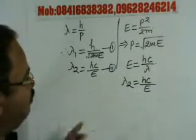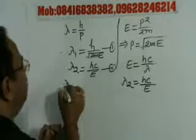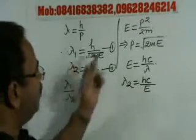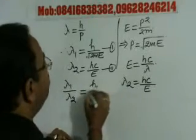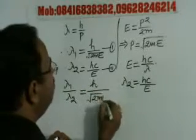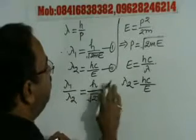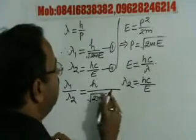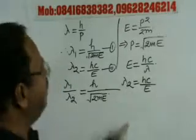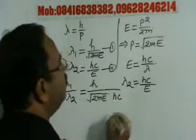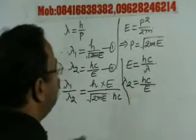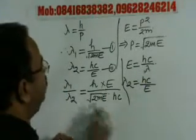From equations 1 and 2, we can have lambda 1 divided by lambda 2 is equal to H upon under root 2ME, divided by lambda 2 which is HC divided by E. Now we can solve this.